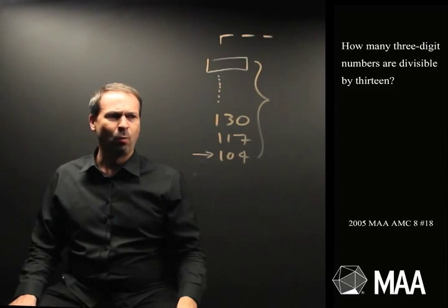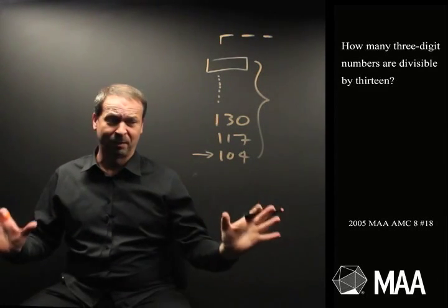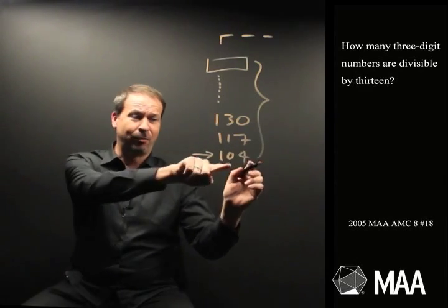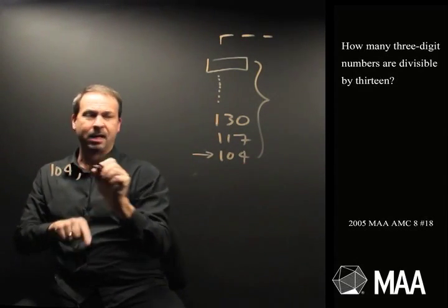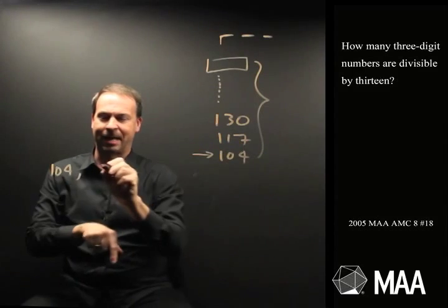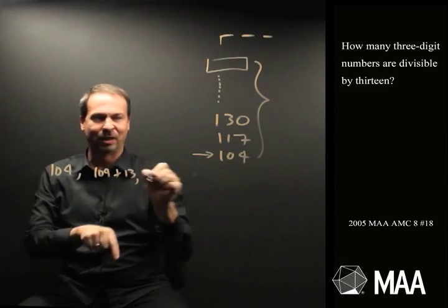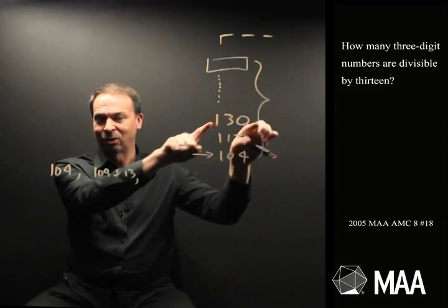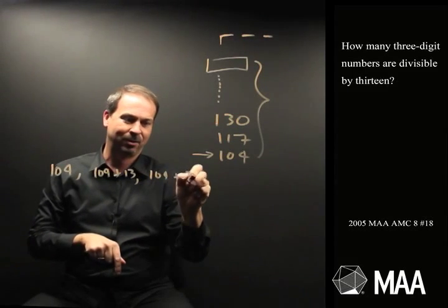Hmm. Well, one approach, I don't know if it's the best approach, but it's just what's come to my mind right now. I've got the number 104. I've got the number 104 plus 13, which I'm being a little strange here. I've got 104 plus two 13s, 2 times 13.